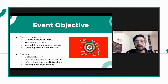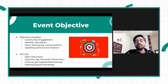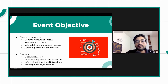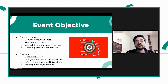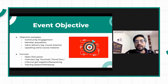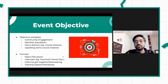Then comes event objective. You could have different objectives like community engagement, member acquisition, or value delivery. For example, if your event is part of a course, it's primarily delivering value to your members. Some events might also be upselling a certain course or something in your community. Based on these objectives, you can then come up with formats — whether an open discussion, an interview, a town hall, a panel discussion, an informal networking get-together, or a training session or workshop.